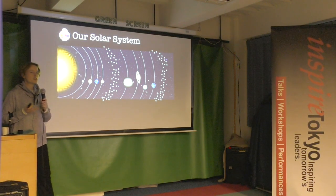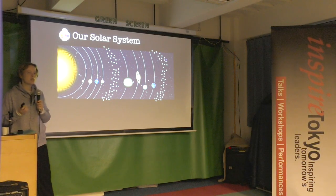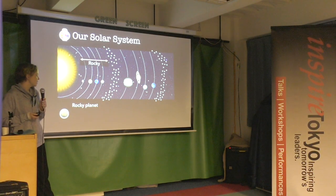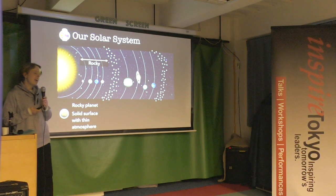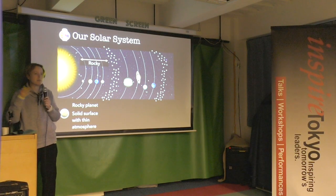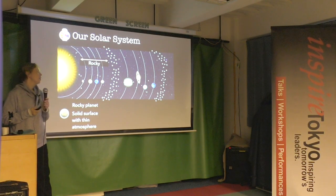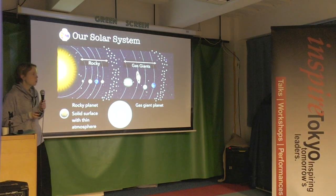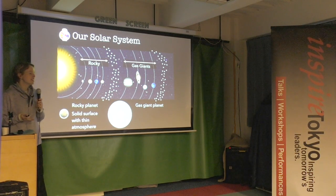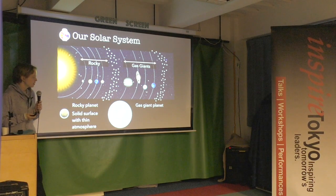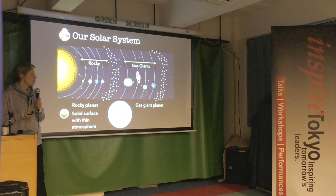If we look at these eight planets and ask what we know about planet formation, the first thing we note is they're divided into two groups. We have rocky planets like Earth or Mars, which have a solid surface and a relatively thin atmosphere. Beyond the asteroid belt, we have gas giants.